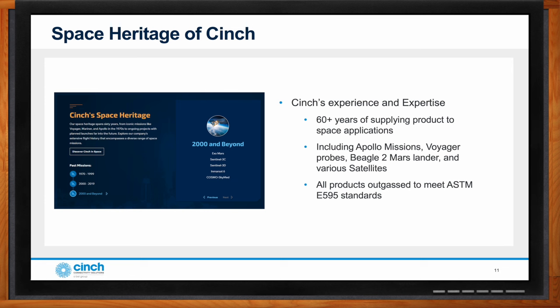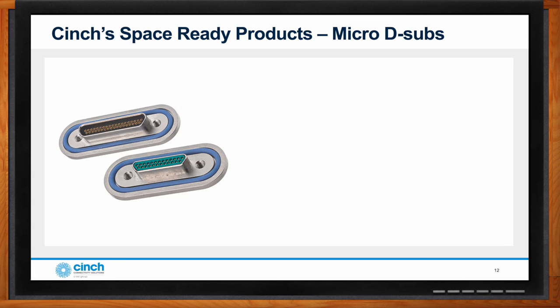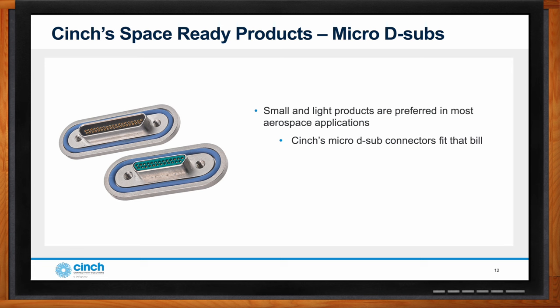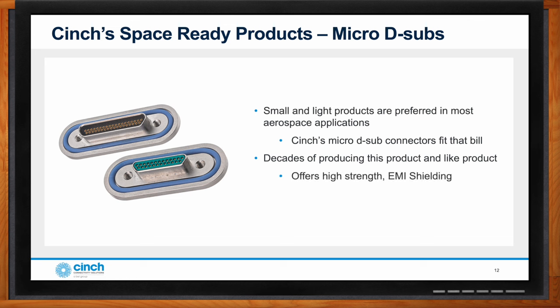Our core competencies are in traditional power and signal interconnects, input/output connectors, optical products (both passive and active), and radio frequency (RF) interconnects for higher frequencies. Products like our micro D-sub connectors are high-reliability, space-ready, small, and lightweight, yet capable of significant signal and power transmission between spacecraft communication systems, sensors, and cameras. We also offer micro circular interconnects.